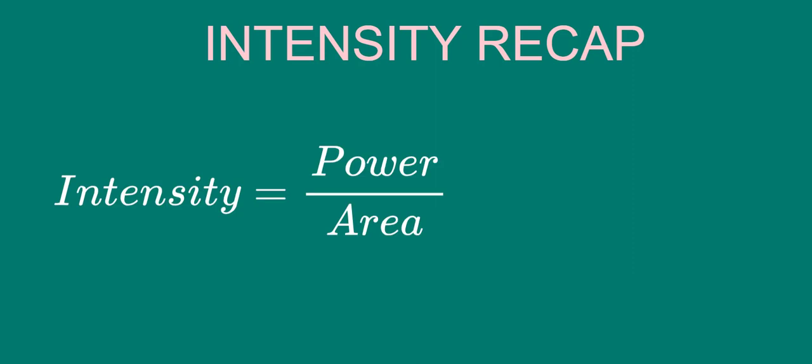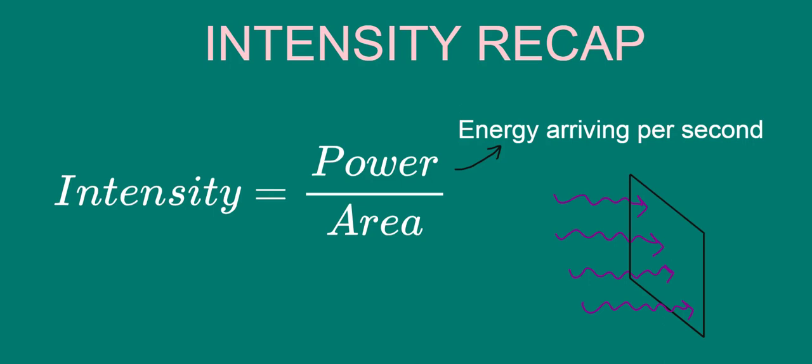To recap, the intensity of a beam of radiation is defined to be power divided by area. By power, we mean the energy arriving per second onto a surface of some area at right angles to the beam, as shown.